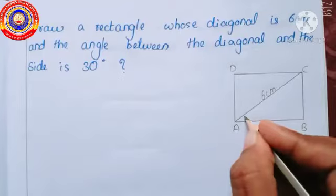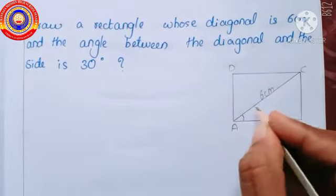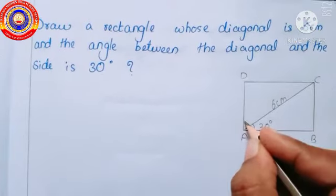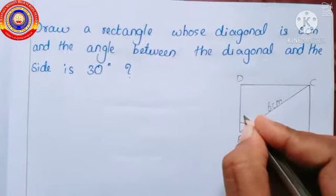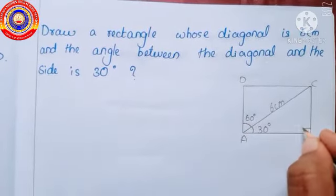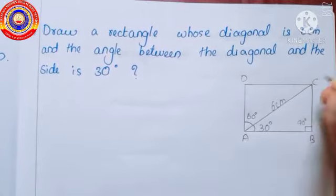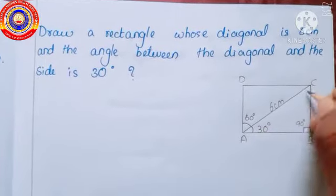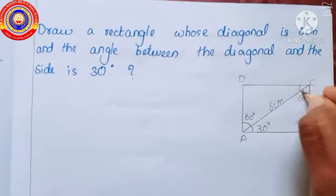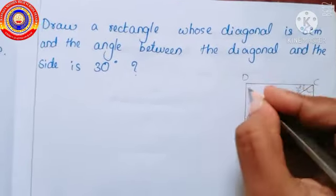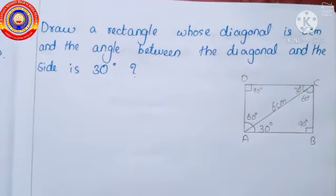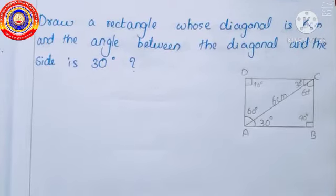This is a rectangle with a diagonal 6 centimeters long and the angle between the diagonal and the side is 30 degrees. If this angle is 30 degrees, then the angle over here is 60 degrees and the angle at B is 90 degrees. As we know, the sum of angles in a triangle is 180 degrees, so the remaining angle is 60 degrees. The angle at D is 90 degrees. This is the rough figure for this question.